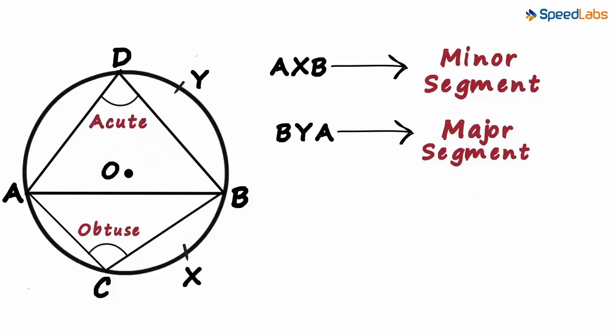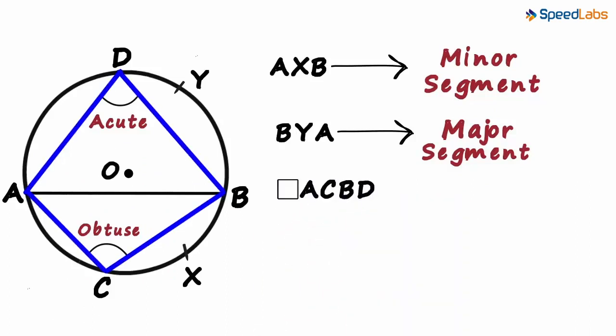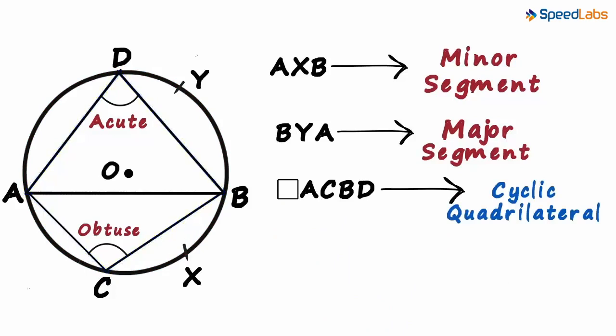Yes, smaller the segment bigger the angle. I'm not sure if you observed it, but there is a quadrilateral ACBD that is formed with all its four vertices lying on the boundary of the circle. These kinds of quadrilaterals are called cyclic quadrilaterals.